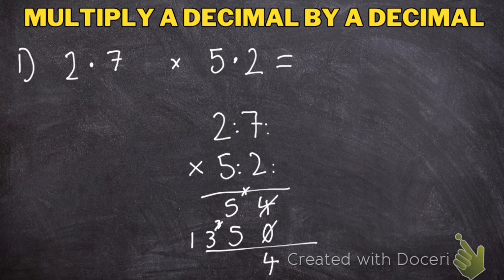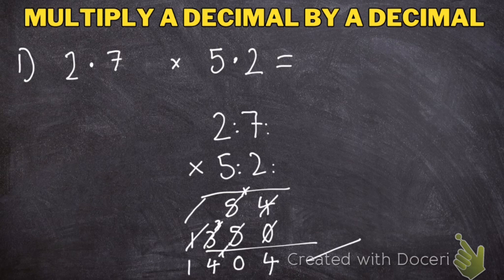Then I'm going to add it up. 4 add 0 makes 4. 5 add 5 makes 10. 3 add 1 makes 4. 1 add 0 makes 1. So I have an answer of 1,404.